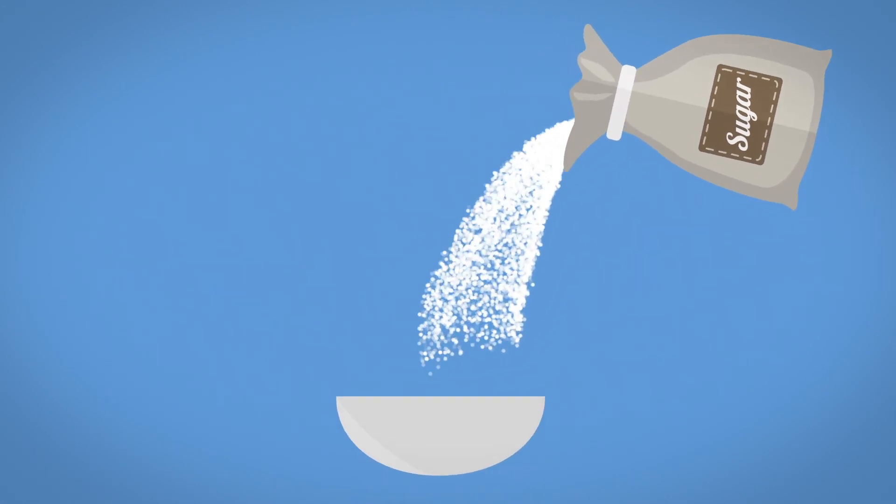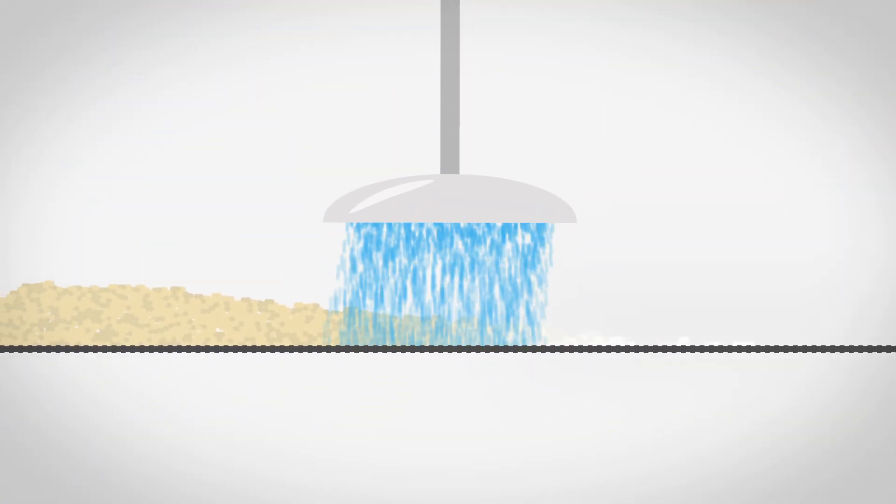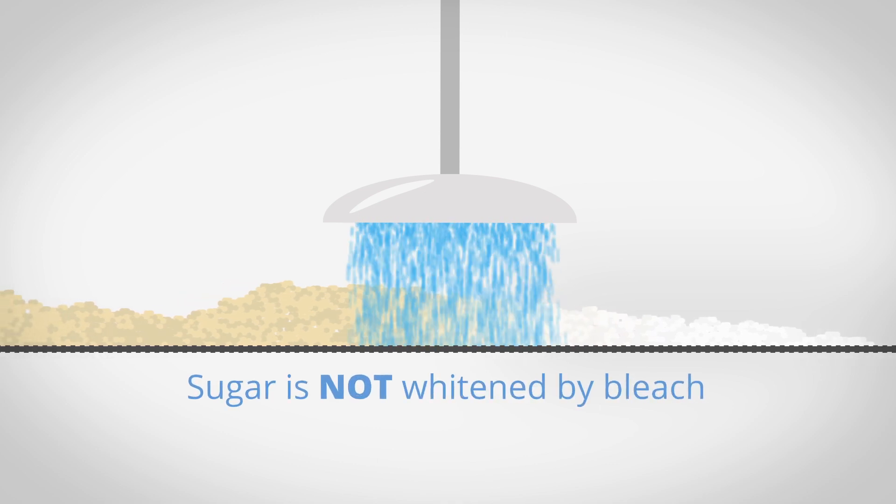Real sugar is naturally white. Sugar is simply removed from the plant and washed to remove the naturally present molasses and other plant materials. It is not whitened by bleach.